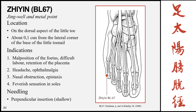The next point is Zhiyin, Bladder 67, the jing well and metal point of the meridian. It is located on the dorsal aspect of the little toe, 0.1 cun from the lateral corner of the base of the little toenail. Indications include malposition of the fetus, difficult labor, retention of the placenta, headache, ophthalmalgia, nasal obstruction, epistaxis, and feverish sensation in the soles. Needling is a shallow perpendicular insertion. When using this point for malposition of the fetus, moxibustion is normally applied.